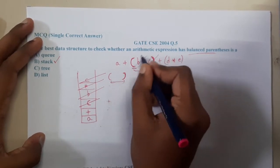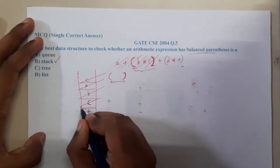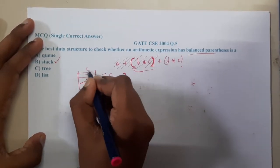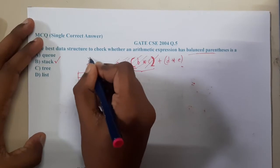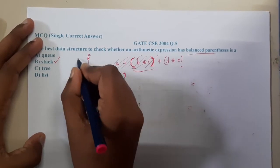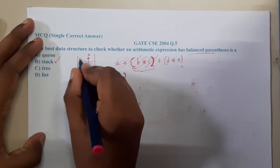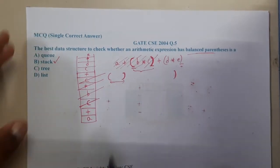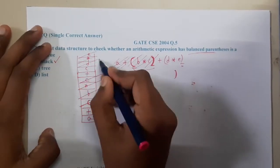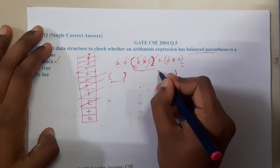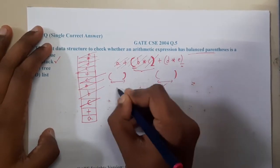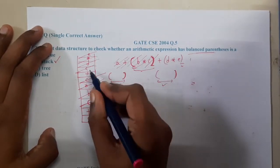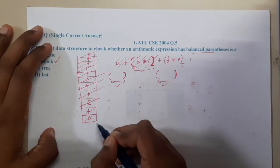So until here the expression is done. Continue pushing: push '+', push open bracket, push 'd', push '*', push 'e'. Once you get the next close bracket, start popping again until you find the open bracket. That bracket pair is also complete, and now the full expression has been processed.